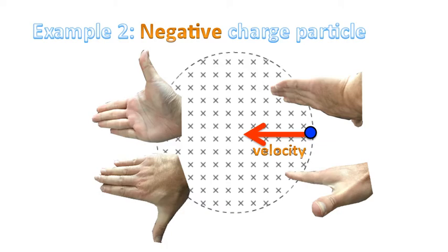Again, notice our fingers are always aimed in the same direction as the velocity for all four instances here. Those two instances don't work. Why? Because the palm has to face inwards in this situation because we have X's representing the magnetic field.